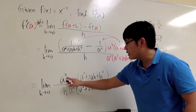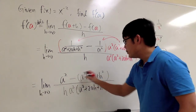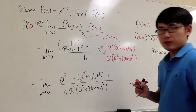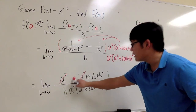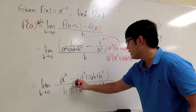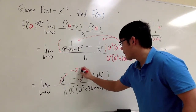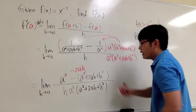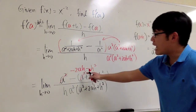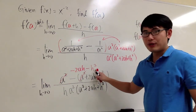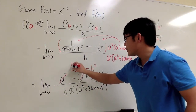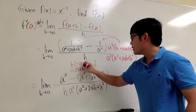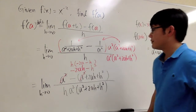Distributing the negative into the parentheses: a squared minus a squared cancels. Then negative times 2ah gives us negative 2ah, and negative times h squared gives us minus h squared. On the top we now have negative 2ah minus h squared. We can factor out h, giving us h times the quantity negative 2a minus h. That h on top can cancel with the h on the bottom.